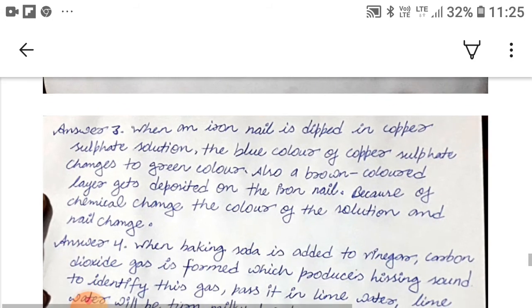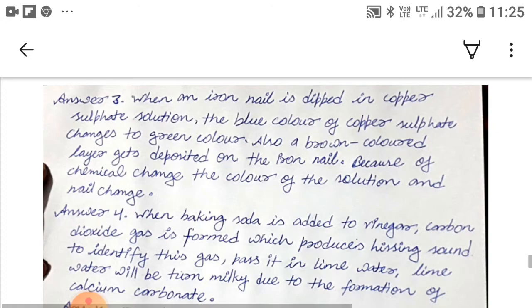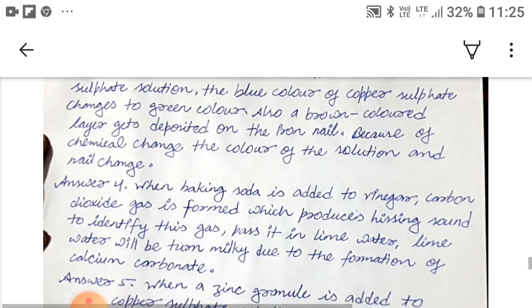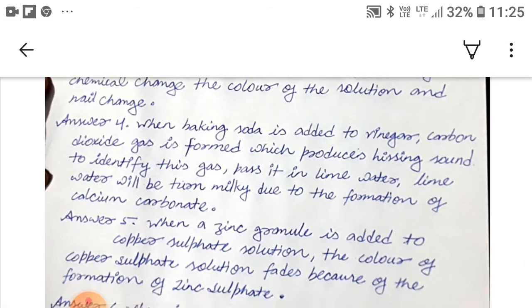So here I am reading answer 1. Physical change is a change in which a substance undergoes a change in its physical property, for example melting of ice. Answer 2, chemical change is a change in which two or more substances react in such a way that there is a formation of one or more new substances, for example burning of wood. Answer 3, when an iron nail is dipped in copper sulphate solution, the blue color of copper sulphate changes to green color. Also a brown colored layer gets deposited on the iron nail because of chemical change, the color of the solution and nail change. Now the answer 4, when baking soda is added to vinegar, carbon dioxide gas is formed which produces hissing sound. To identify this gas, pass it in lime water. Lime water will be turned milky due to the formation of calcium carbonate.